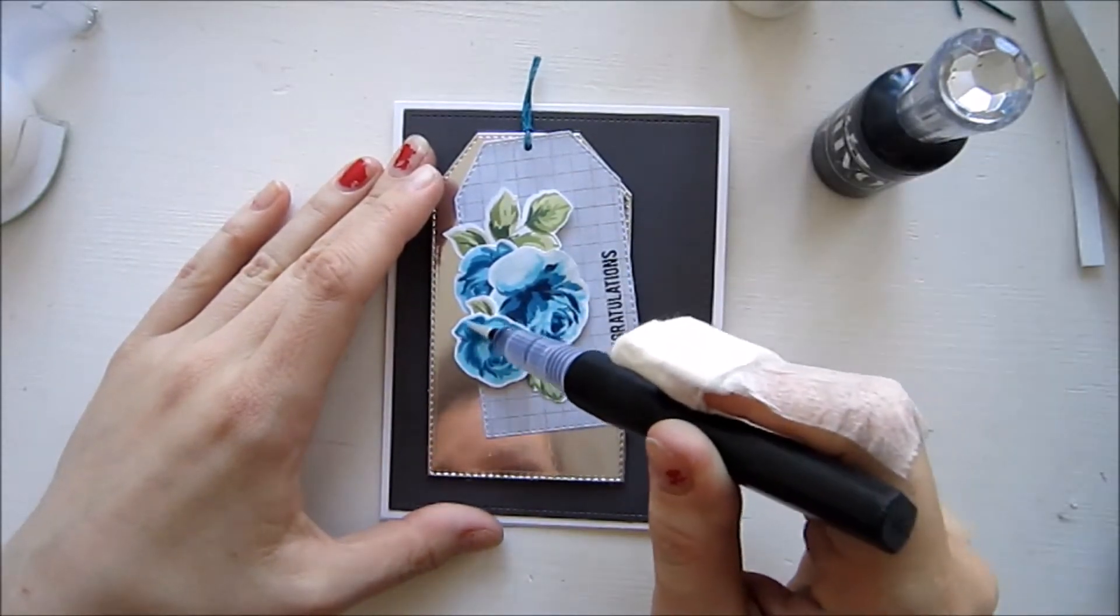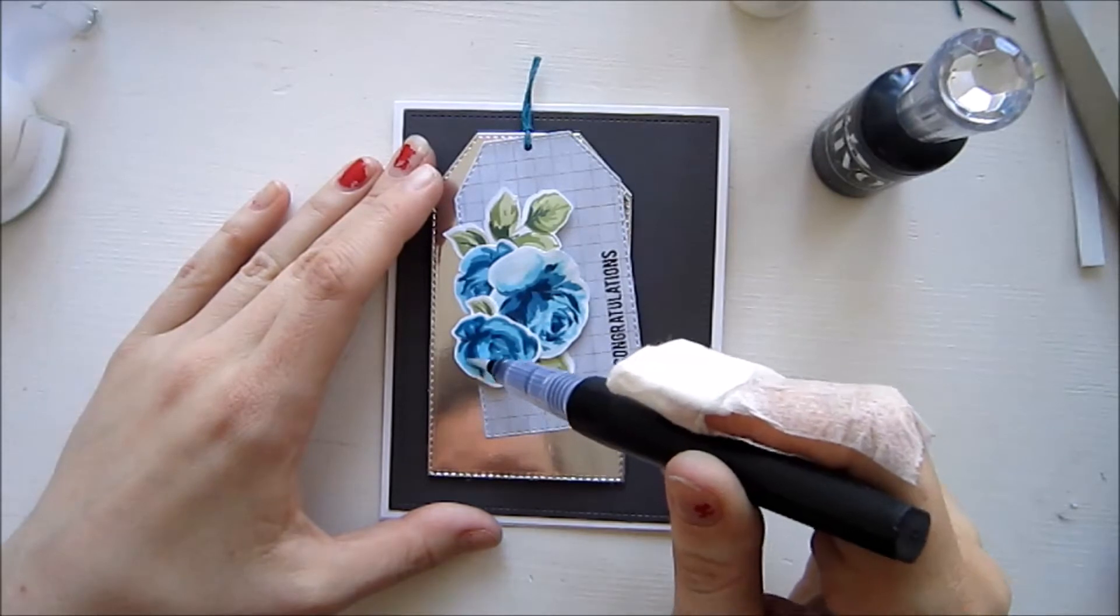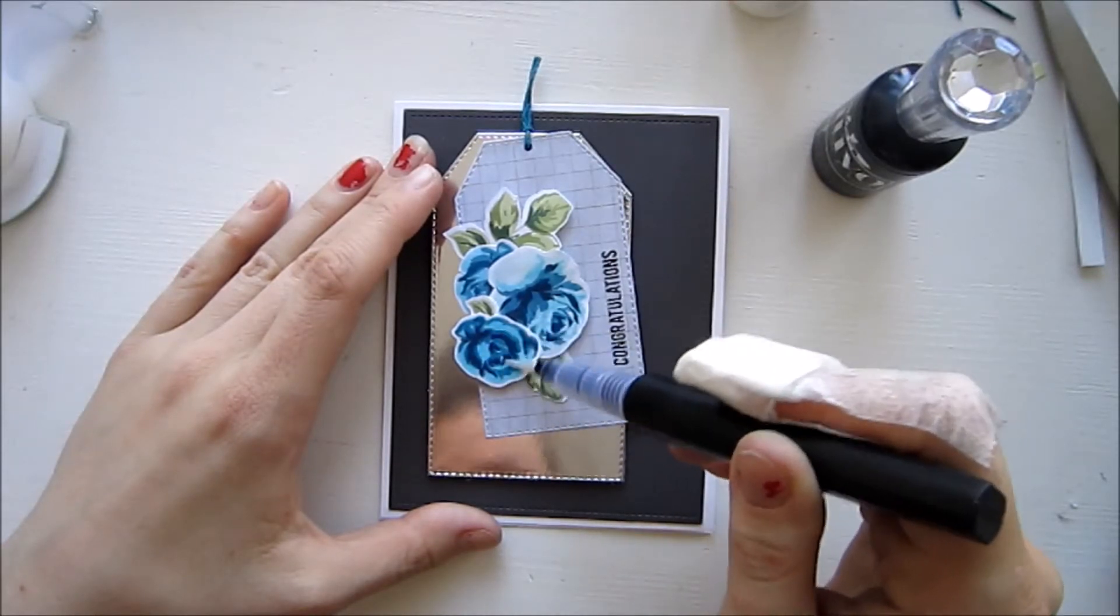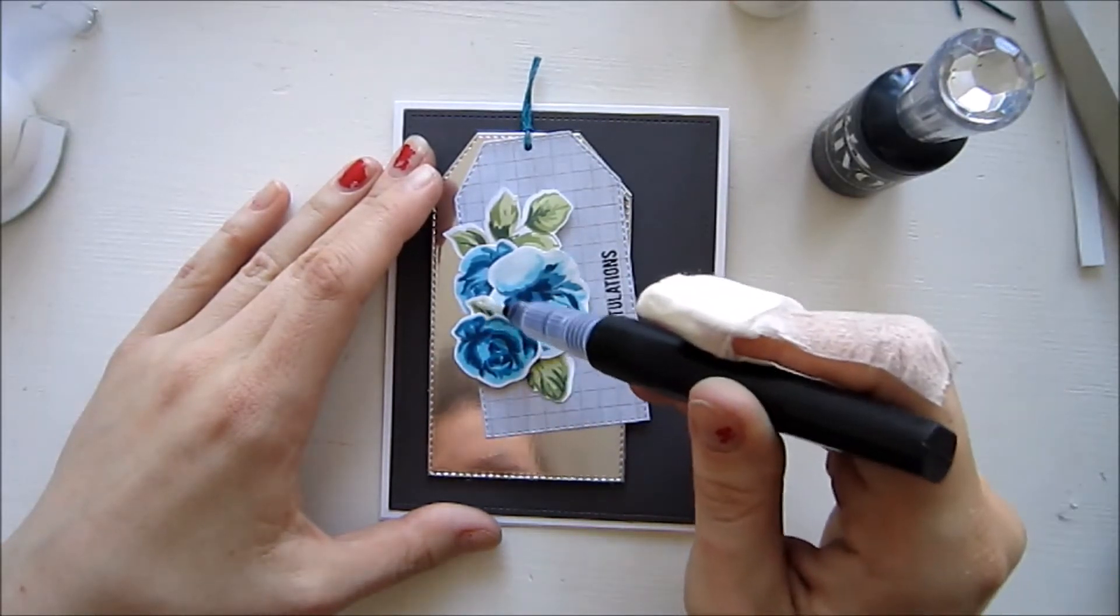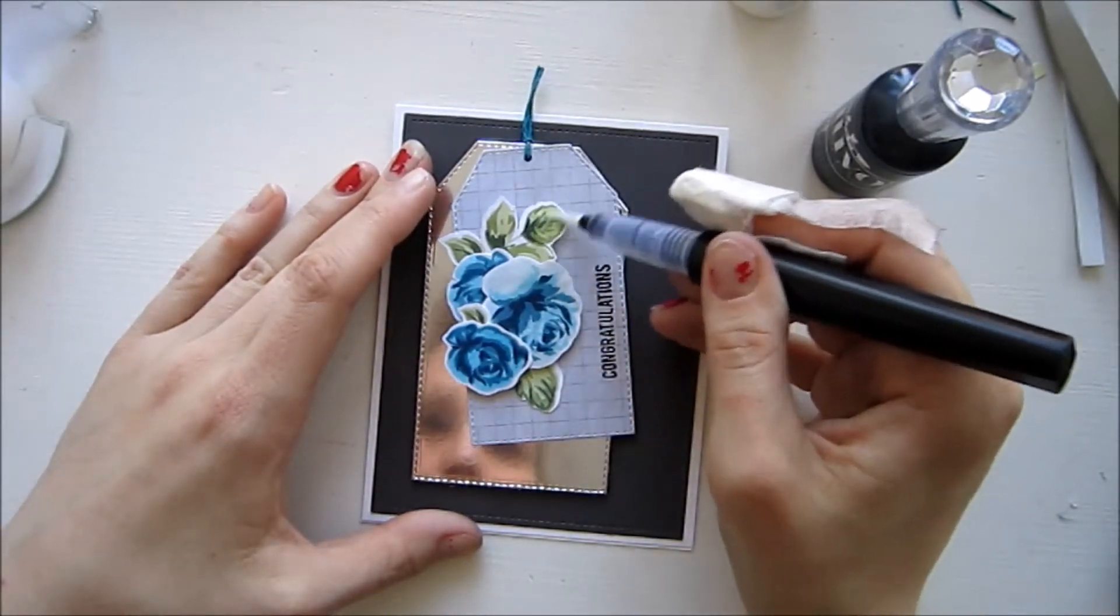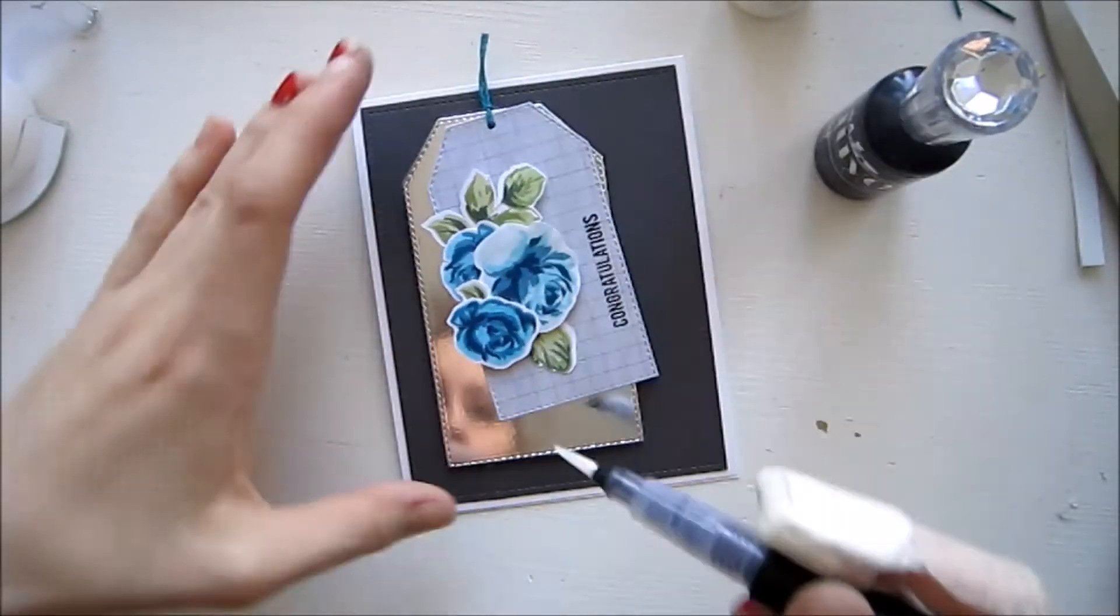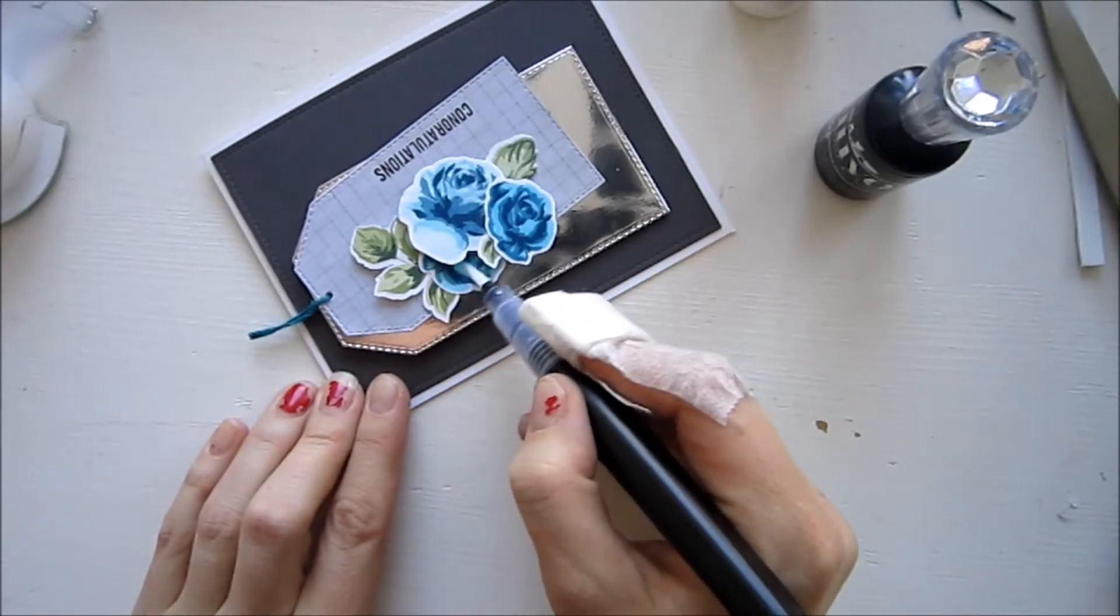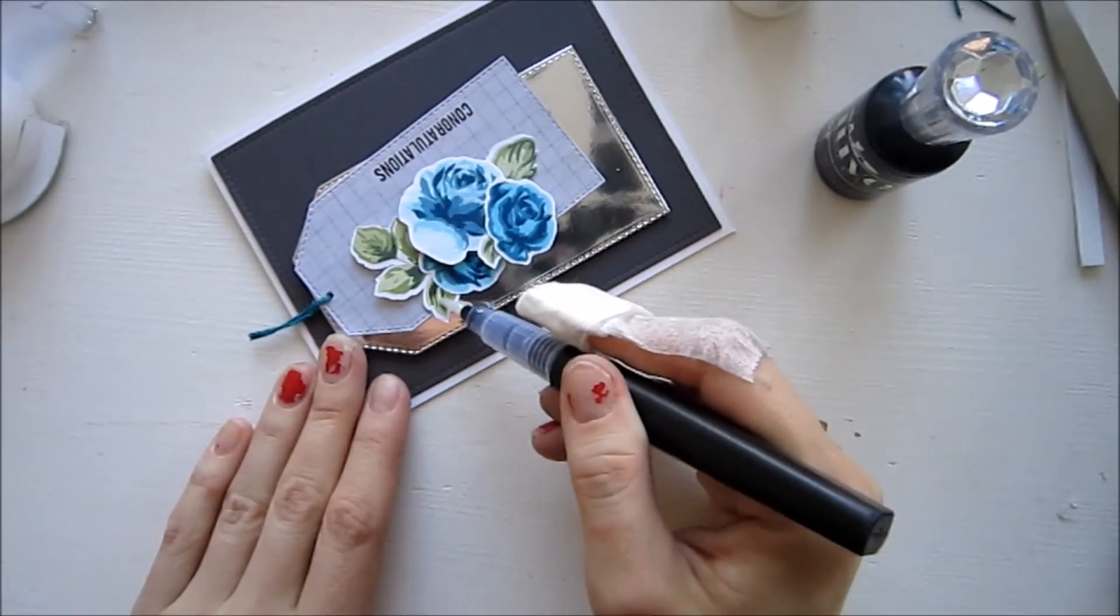I'm covering the entire focal point here, all the roses and the leaf with my Spectrum Noir shimmer pen. I've really been loving this. If you have a Wink of Stella that is nearly the same product and you can use that in a similar way.